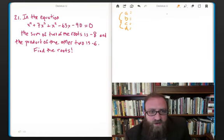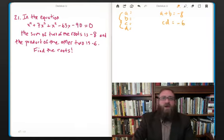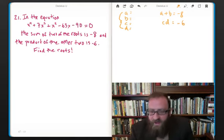It said the sum of two of the roots so let's just pick the first two. So a plus b equals negative 8. And then it says the product of the other two, well the other two according to our scheme here is c times d, is equal to negative 6. So that's not bad. Hopefully that will be sufficient.